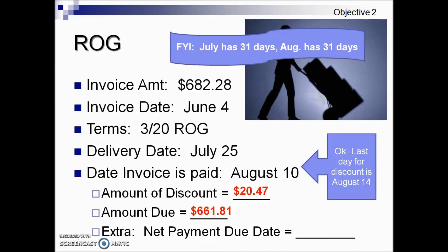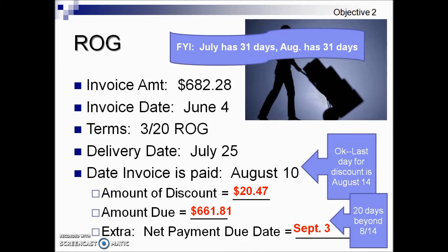An additional question asks: what is the net payment due date had they not paid when they did? To determine that, we need to find the final discount date. We use our delivery date of July 25th and add the number of days eligible — they have 20 days to be eligible for the discount — giving us a final discount date of August 14th. Because this does not have a net amount given in the terms, we add 20 days onto August 14th, which turns out to be September 3rd. This would be the net payment due date provided they hadn't made the payment when they did.